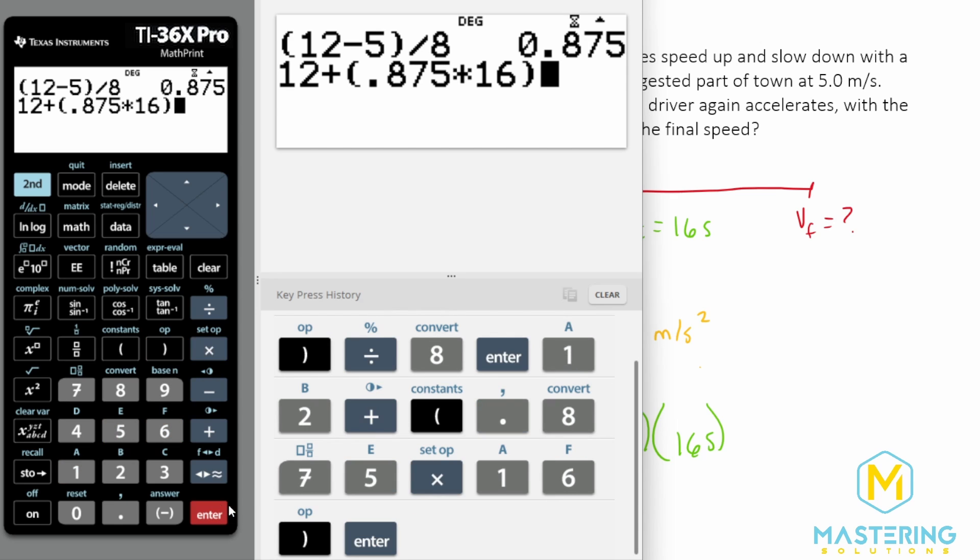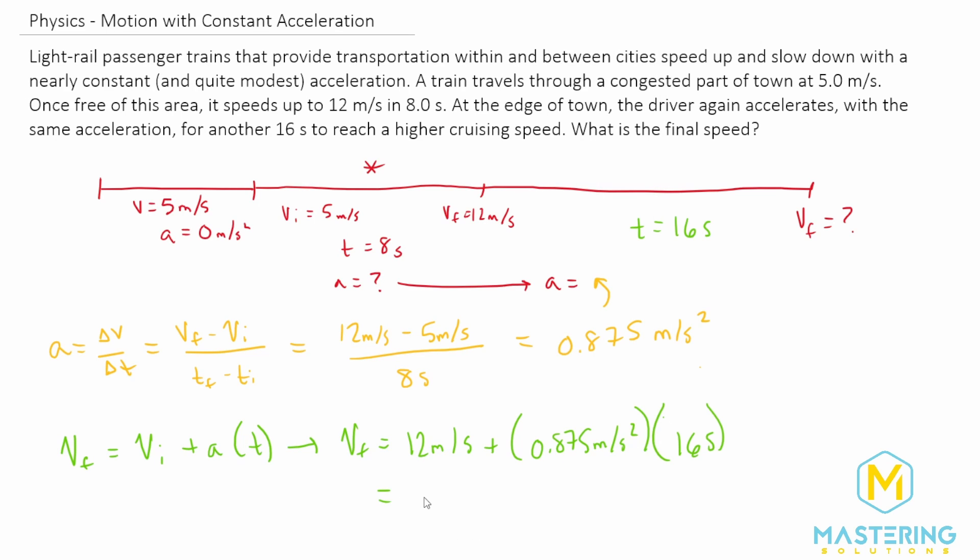And for the final velocity, we have 26 meters per second. So the final velocity for the light rail after all those sections is 26 meters per second.